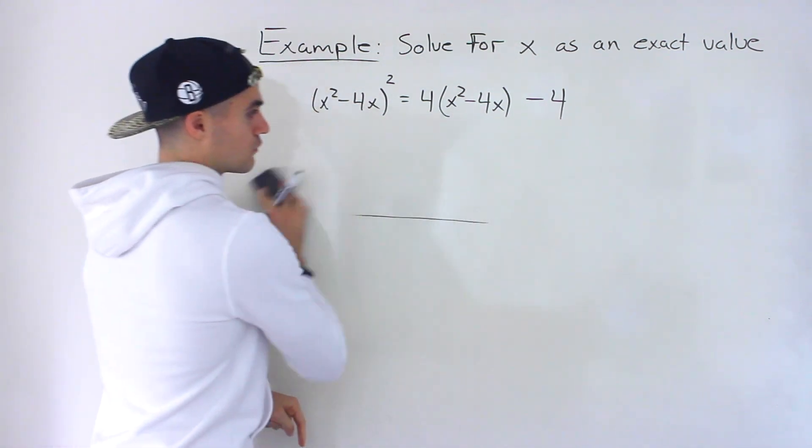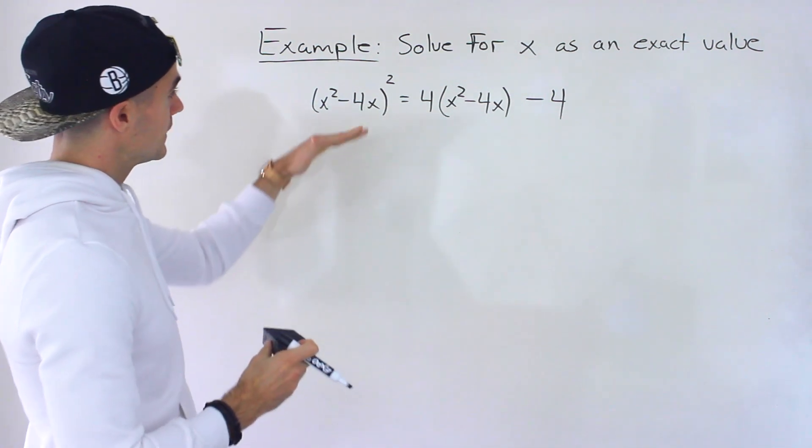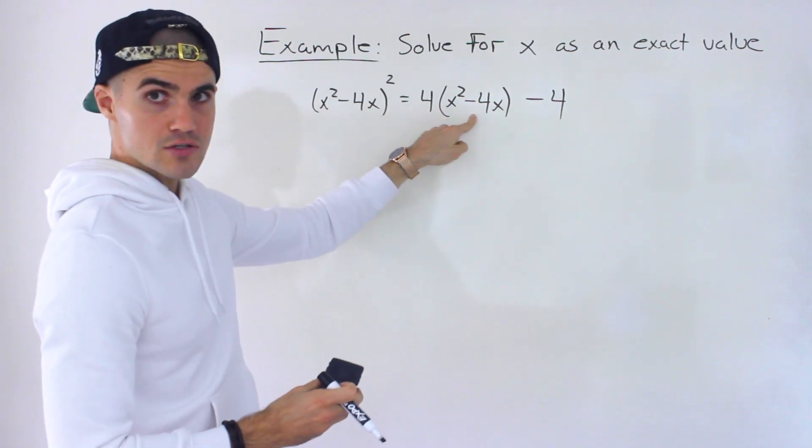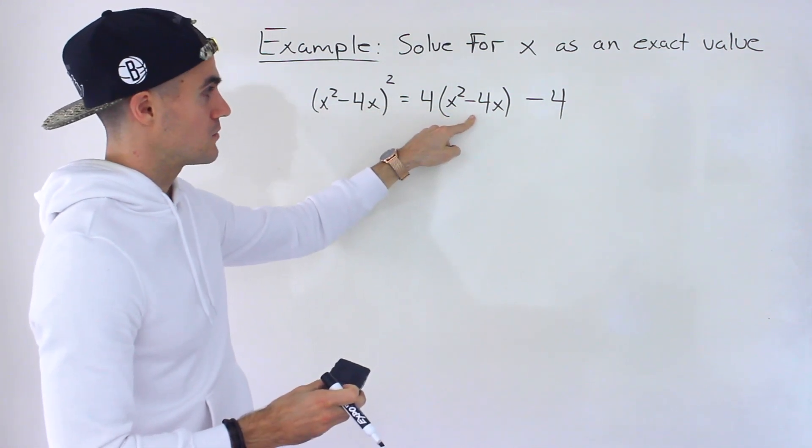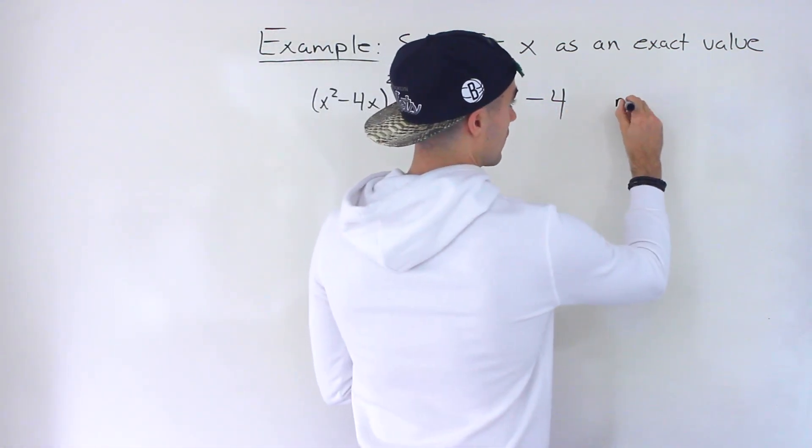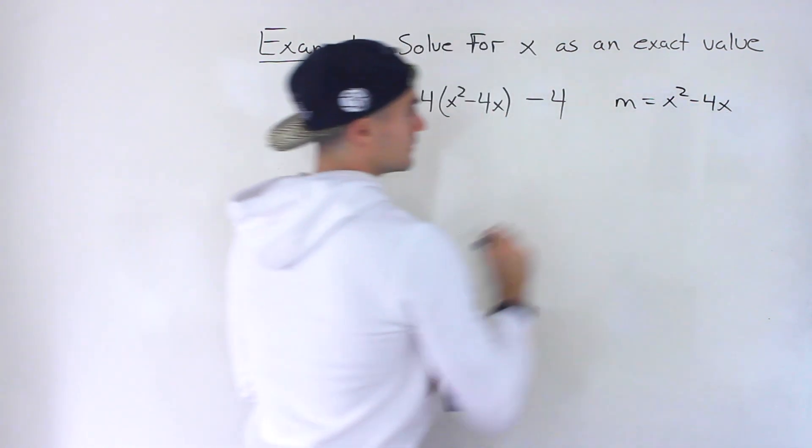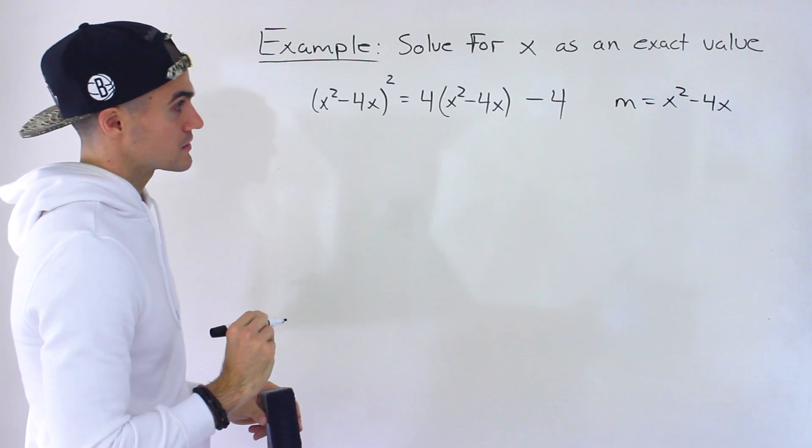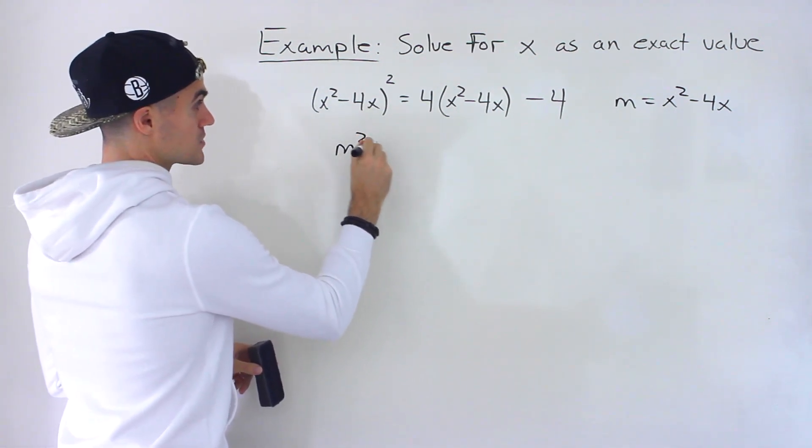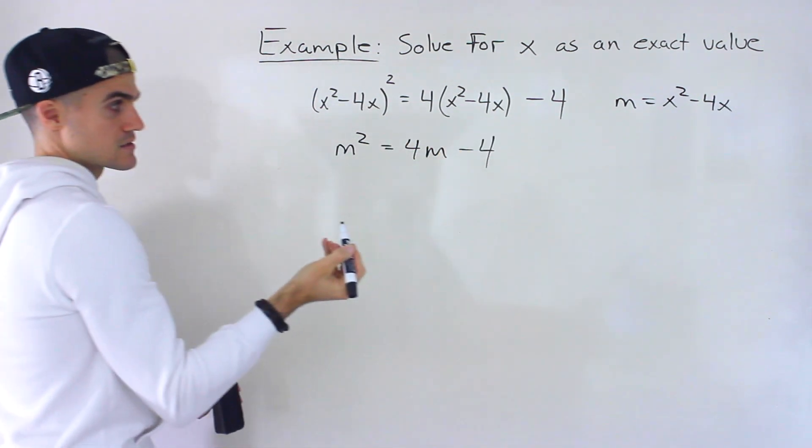So what we can do is we can actually work from here first and what we can recognize is that this x squared minus 4x bracket is also showing up over here x squared minus 4x. And so what we can do is we can actually introduce another variable let's say m and we can make it equal to x squared minus 4x and so now we'd plug in m over here we'd have m squared equals 4m minus 4.